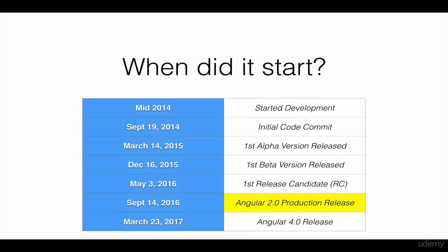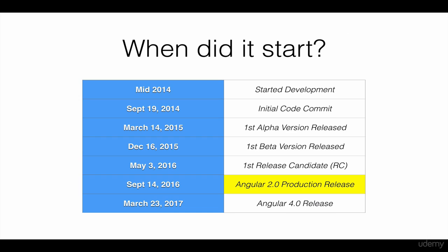When did it start? Before the new Angular 2 framework, we actually had the AngularJS framework, or Angular 1. AngularJS, which is based on JavaScript, was initially released way back in 2010. After several years, the Google team had planned to build a totally new Angular framework, with different architecture and modules from the old AngularJS.